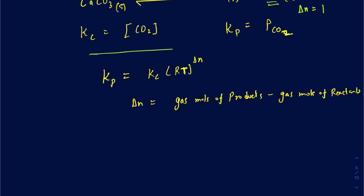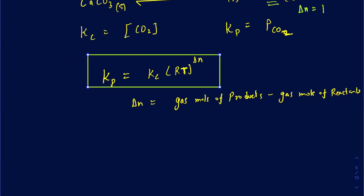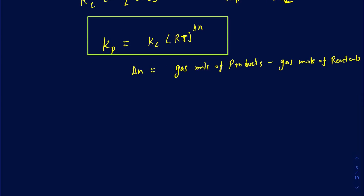This is an equation you want to memorize and be very familiar with, because it gets used a lot. Under what conditions would Kp equal Kc? The only time Kp and Kc are equal is when the RT term becomes one — which happens when delta N equals zero, meaning the gas moles on the reactant side and the product side are the same. That's an important thing to know.